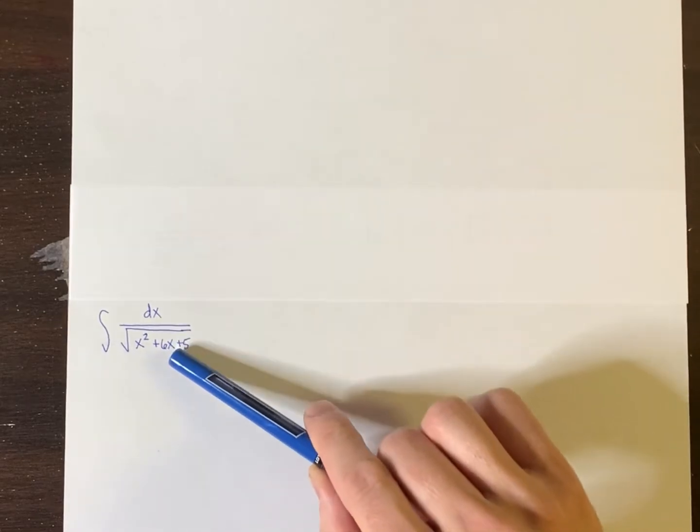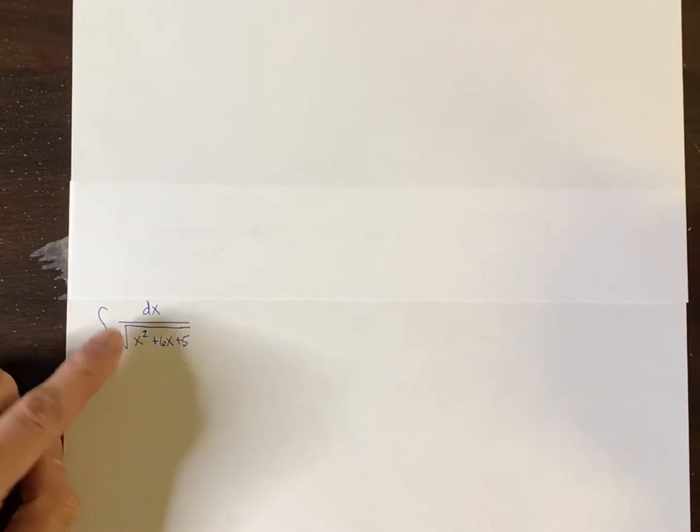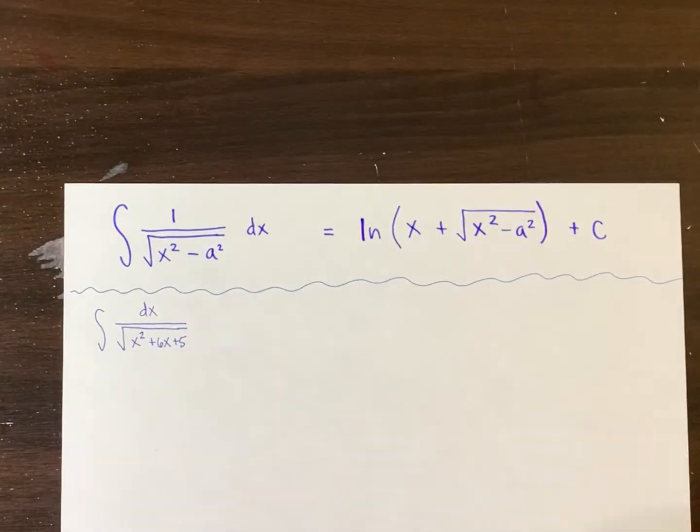So we want to find this integral here. Now, as soon as I saw this, a specific identity came to mind. And that's this one here.